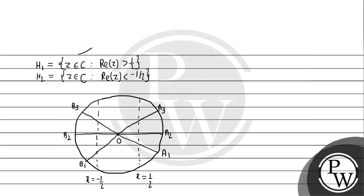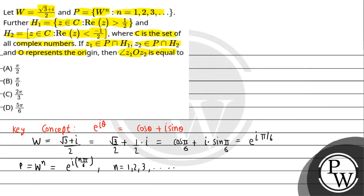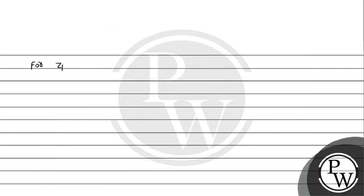h1 के हिसाब से z1 के लिए real part of z greater than 1 upon 2 होनी चाहिए। Real part की बात करें तो वो cos(nπ/6) के form में आएगा, क्योंकि e raised to power iota n pi by 6 है। तो हम लिख सकते हैं cos(nπ/6) plus iota sin(nπ/6)। Real part होगा cos(nπ/6)। For z1, cos(nπ/6) should be greater than 1 by 2.